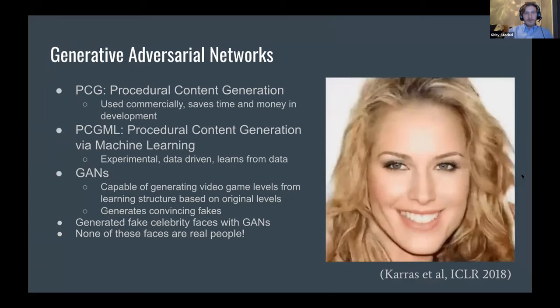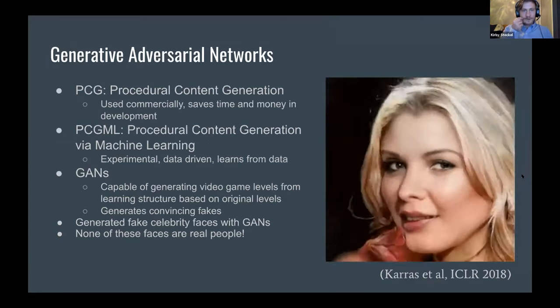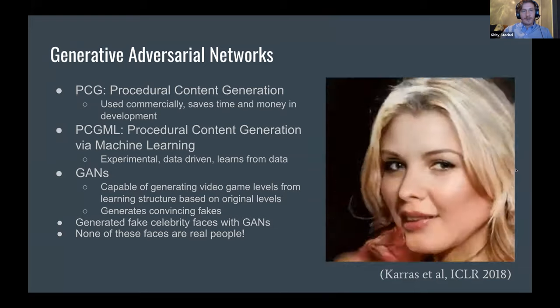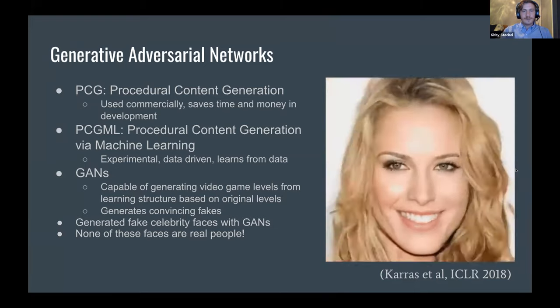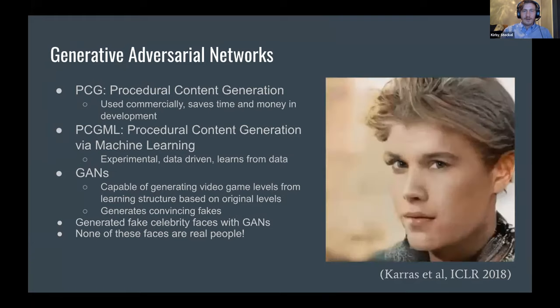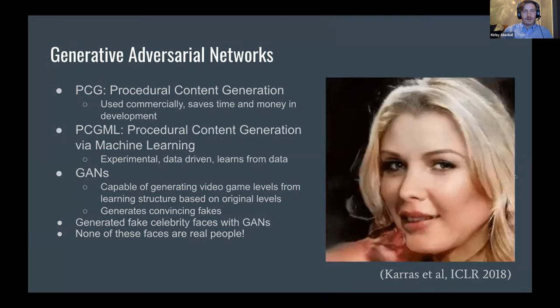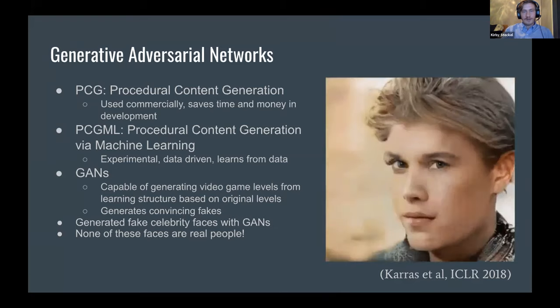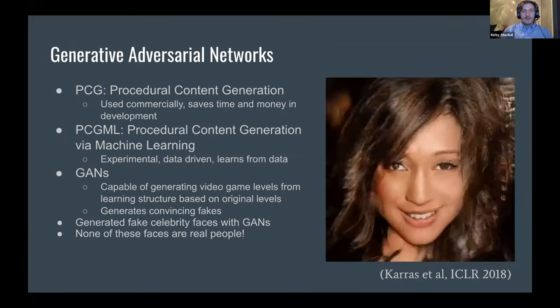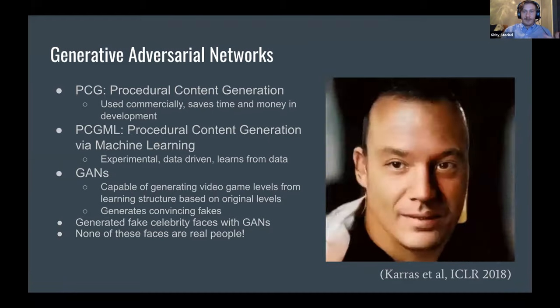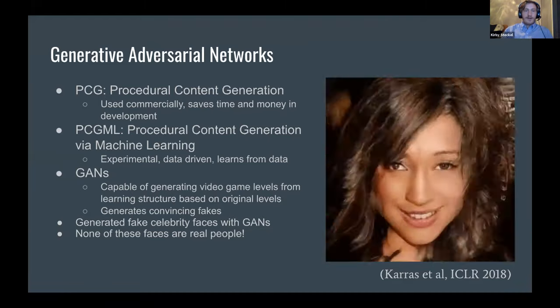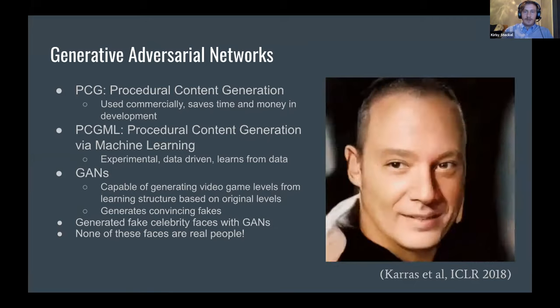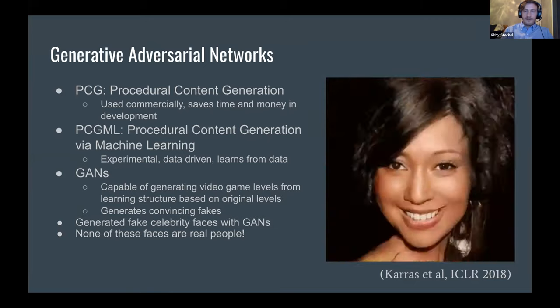Before we go into generative adversarial networks, we need to talk a little bit about procedural content generation. It's pretty much just an algorithmic way of determining rules and levels for games to save time and money during development. So what we're doing is procedural content generation via machine learning, which is still experimental, not used in industry, and it's data driven. GANs are capable of generating video game levels from learning structure based on the original levels and it can generate convincing fakes.